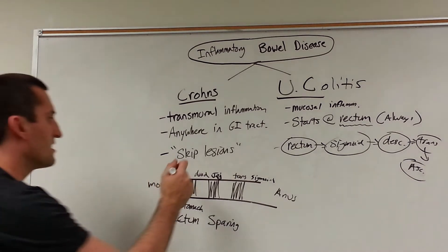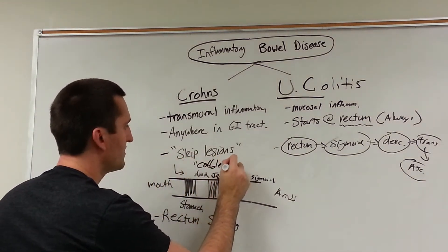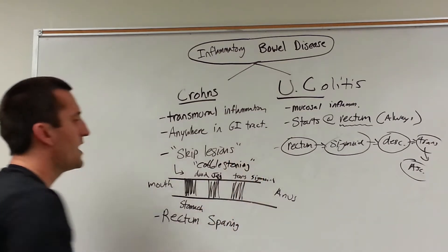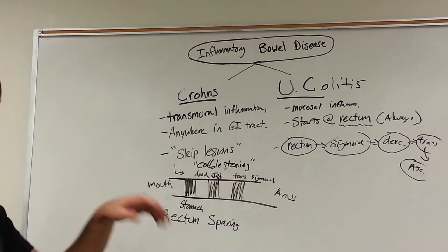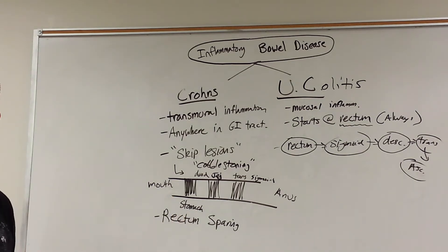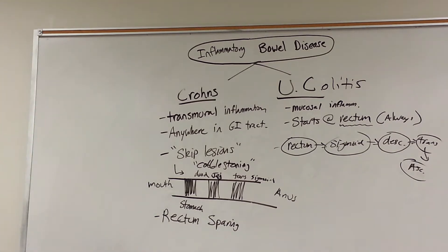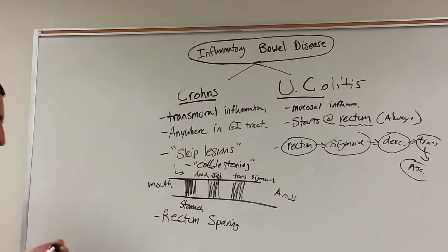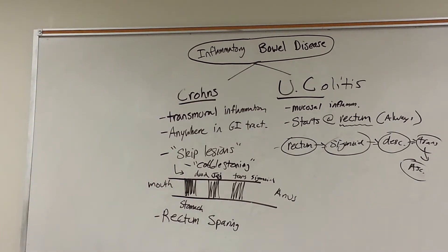You may also see cobblestoning in Crohn's. Imagine Dorothy skipping down a cobblestone road — that's kind of what it looks like on the inside during a colonoscopy. That cobblestoning effect is going to be more pathognomonic of Crohn's disease, though not the only disease you'll see it in, so be careful with that.